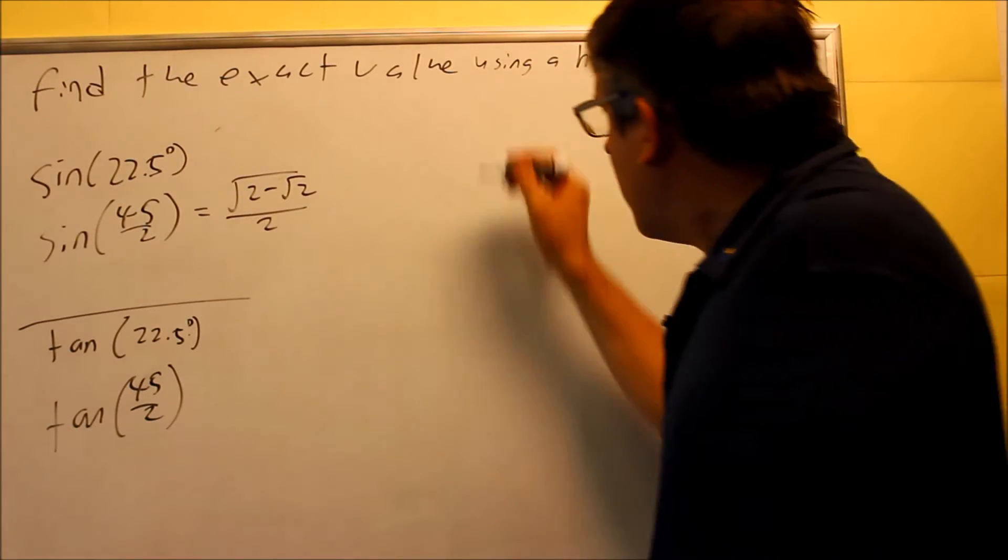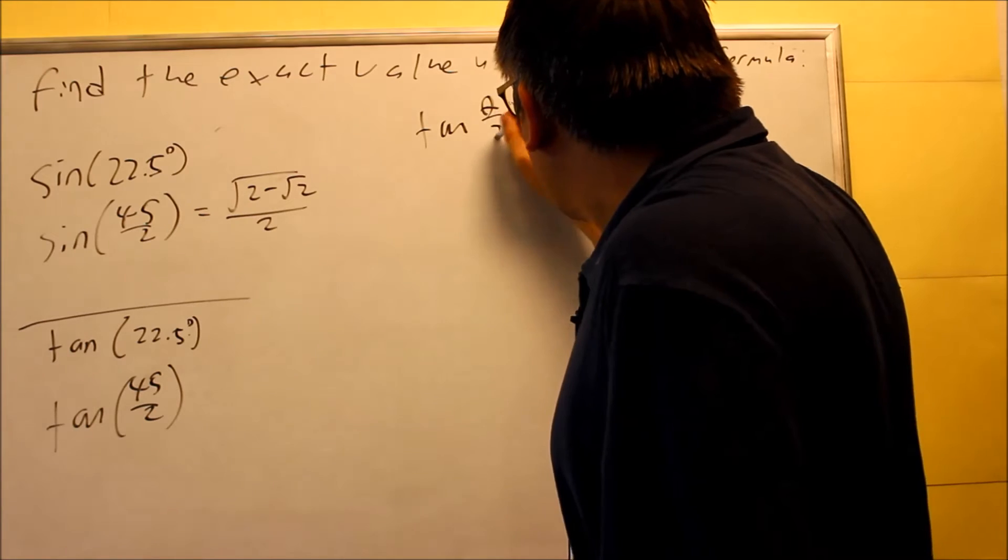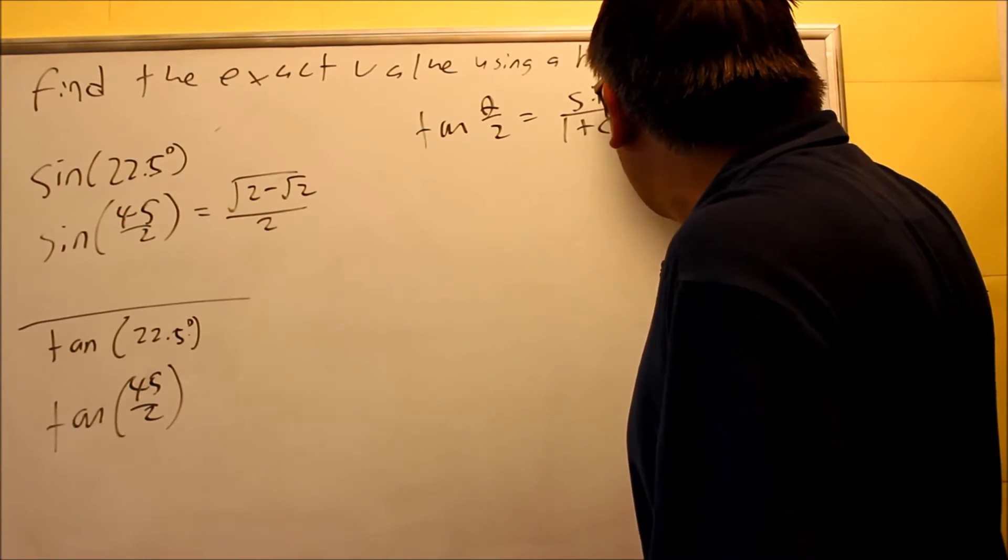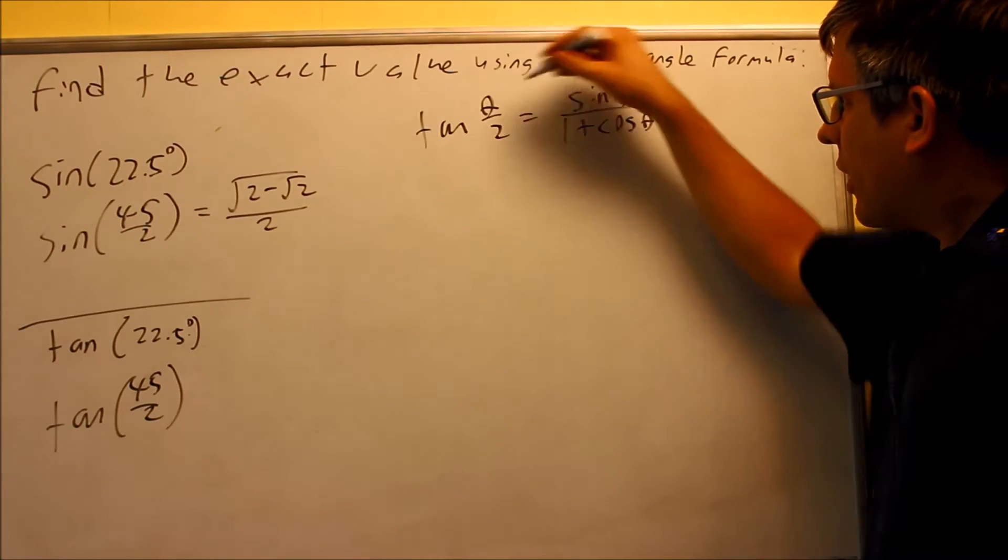This formula for tangent theta over 2, that's equal to sine theta over 1 plus cosine theta.